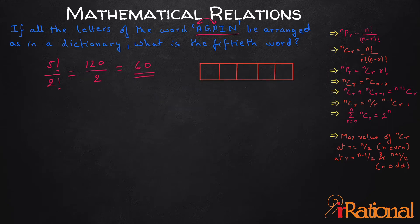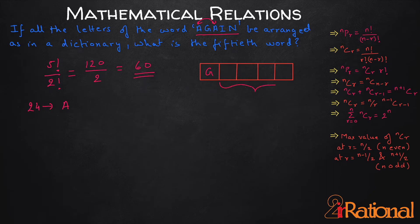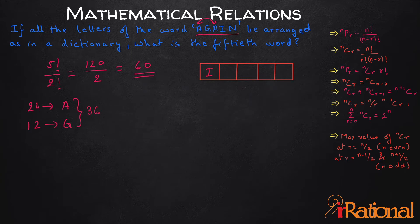We fix the first letter as A. For the remaining 4 positions we have 4 factorial options, giving 24 words starting with A. In these 4 remaining letters — A, G, I, N — there is no repetition. The next letter in dictionary order is G. Fixing G first, we have 4 factorial divided by 2 factorial because we still have 2 A's, giving 12 words. Similarly, fixing I first also gives 4 factorial divided by 2 factorial = 12 words.